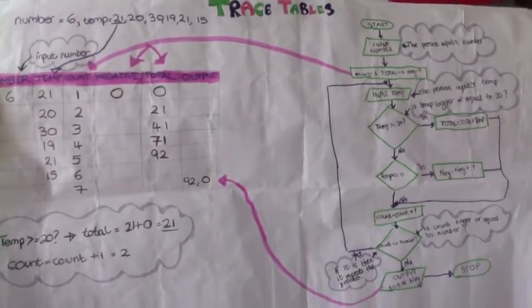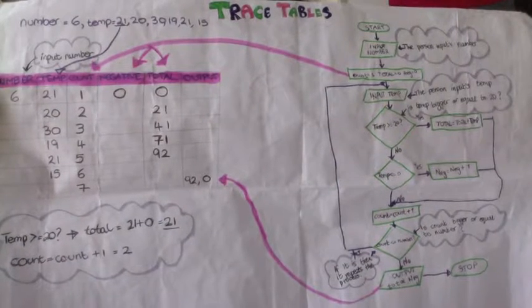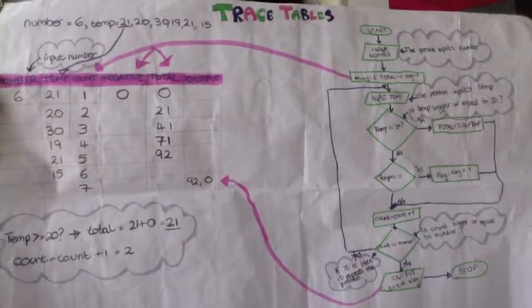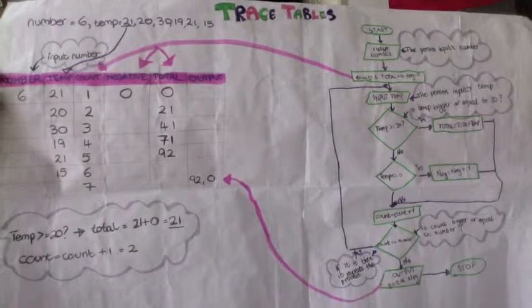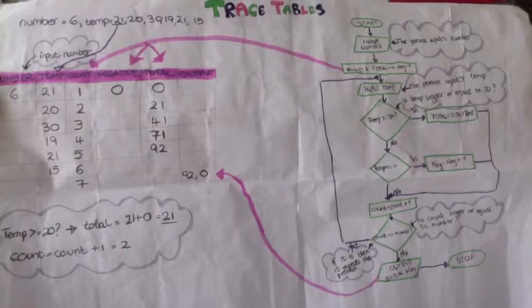Then it asks you to input temp. Temp is 21 and it asks you if temp is bigger than or equal to 20. Because it's 21, yes, so total equals total plus temp. So we know that total is 0, so 21 plus 0 is 21.